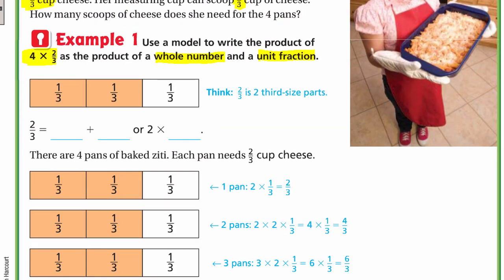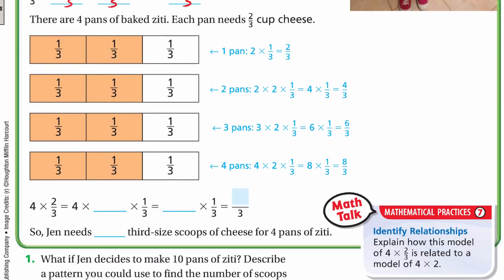For one pan, which is 2/3, we can decompose it as 1/3 + 1/3, or using repeated addition, that's 2 × 1/3. But what if we have four pans? For each pan we need 2/3. So we count the thirds: one, two, three, four, five, six, seven, eight thirds. Using the model we know that we need eight thirds.